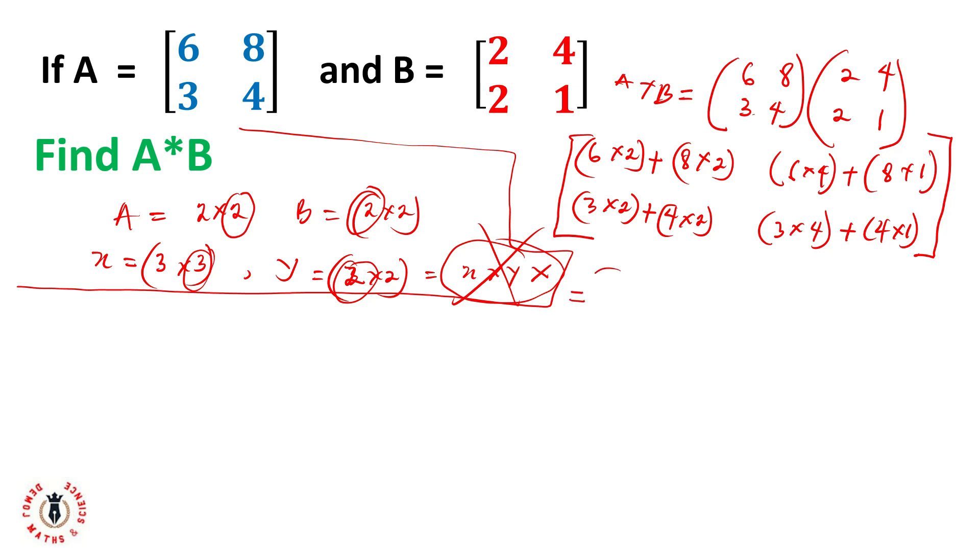Let's close up this bracket. So my matrix now looks like 6 times 2 is 12, plus 8 times 2 is 16. And 6 times 4 is 24, plus 8 times 1 is 8. And 3 times 2 is 6, plus 8 times 4 is 8, 8 times 4 is 12, plus 4 times 1 is 4. So my final answer will look like 12 plus 16 is 28, 24 plus 8 is 32, 8 plus 6 is 14, and 12 plus 4 is 16. So here is the multiplication of all the products of A and B.